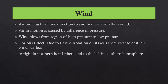Wind is air moving from one direction to another horizontally. Air in motion is caused by a difference in pressure. Wind blows from regions of higher pressure to lower pressure. Due to the earth's rotation on its axis from west to east, all winds deflect to the right in the northern hemisphere and to the left in the southern hemisphere — this is called the Coriolis effect.